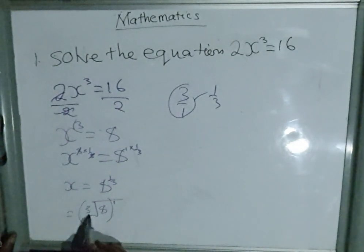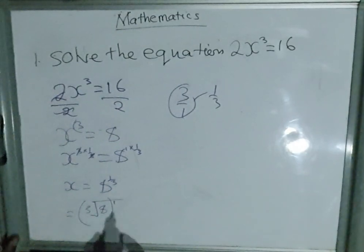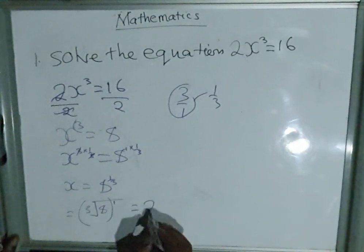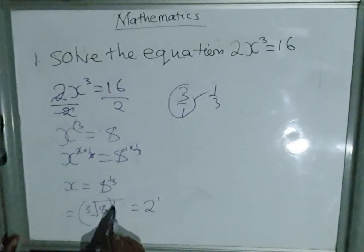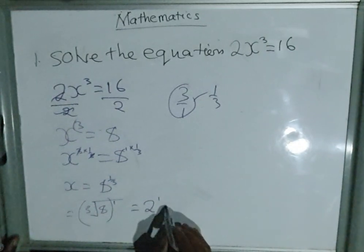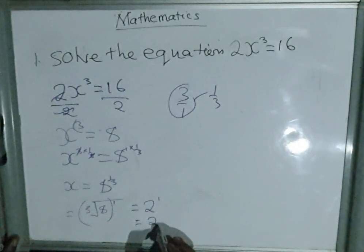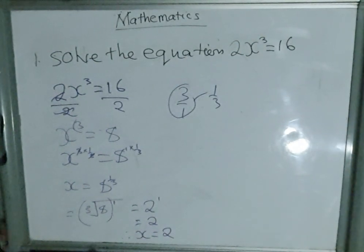You find a number which you can multiply itself three times to get 8. You're going to find that it is 2. With the power 1, it is 2 giving us 2. So the value of x equals 2.